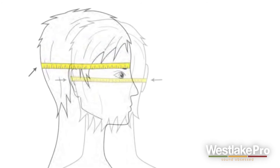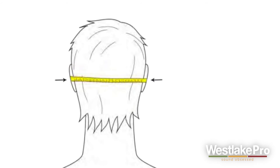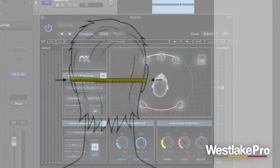Then you have the interaural arc, which is the distance from ear to ear around the back of your head — on a horizontal plane parallel to the floor, just from ear to ear around the back of the head. These measurements are very important to get right because they determine how realistic it sounds when the software does its thing to the audio. Make sure you figure these out and plug them in if you're planning to use NX.